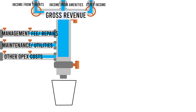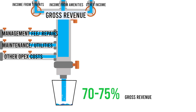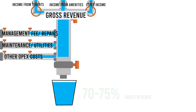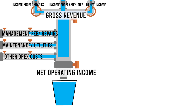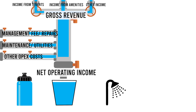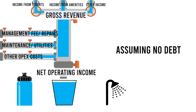Now if you're running a fairly efficient and profitable building, most of the water will still flow to you at the end. Somewhere around 70–75% of gross revenue is a very healthy number. The amount that flows to you, the owner, is called the Net Operating Income, or NOI. You can use that water for whatever you want — drink it, shower with it, shower other people with it. Up to you, supposing you don't have debt on the property.